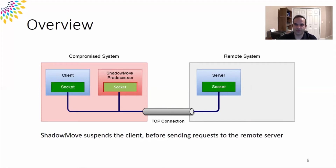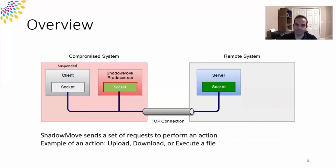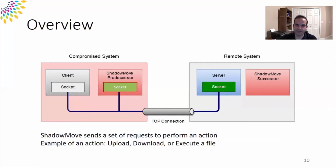However, to send a request to the remote server, ShadowMove should suspend the client process to prevent the possibility of colliding with the client's traffic, as they both share the same underlying input-output buffers. Once the client is suspended, ShadowMove can send its request to the remote server to perform various operations such as uploading or downloading a file and also executing a command. To move laterally to the remote system, it needs to first upload its program and then execute itself.